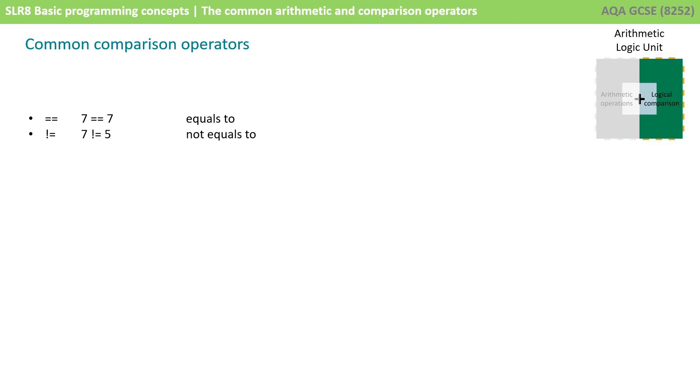The opposite to that is not equals to. Is the value on the left not equal to the value on the right? There are different ways of showing this in programming languages. For your exam, not equals to is an exclamation mark followed by an equals.